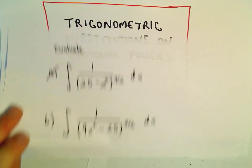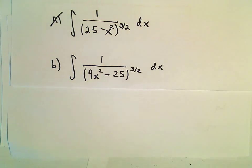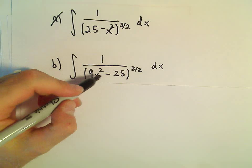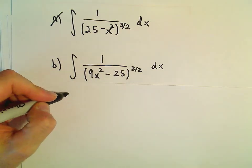Okay, so another example here of a trigonometric substitution involving a rational power. So here we have the integral of 1 over 9x squared minus 25 to the 3 halves power.